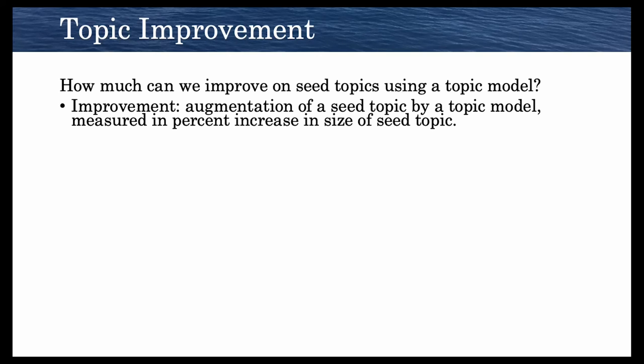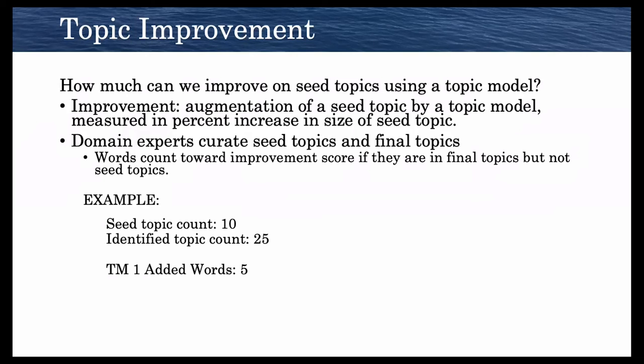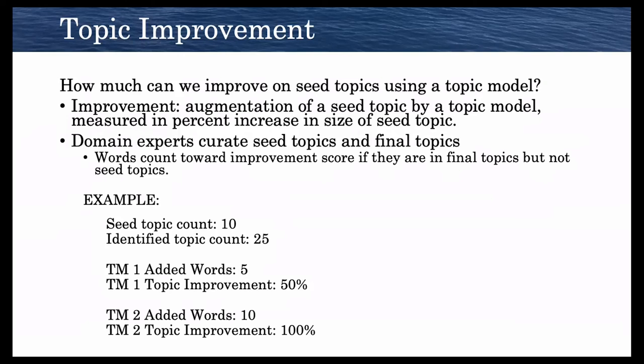Let's look at our first metric, topic improvement. How much can we improve on seed topics using a topic model is what we're going to ask here. Improvement is the augmentation of a seed topic measured in the percentage increase in the size of the seed topic. Domain experts curated seed topics as Pam would do and also final topics. A word counts towards improvement score if it's in the final topic but not in the seed topic. For example, if we have a seed topic that's 10 words and the total final topic count is 25 words, and topic model 1 adds 5 of those new words, then its improvement is 50%. Likewise, if topic model 2 adds 10 words, its improvement is 100%.